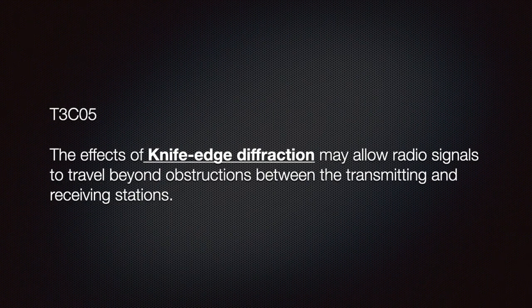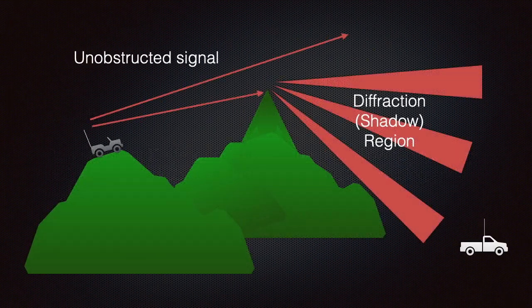Know that the effects of knife-edge diffraction may allow radio signals to travel beyond obstructions between the transmitting and receiving stations. Diffraction is a phenomenon where radio waves bend around corners to reach places which are otherwise not reachable or not in a straight line of sight. In technical jargon, such regions are also sometimes called shadowed regions, a term that comes from the physics of light.